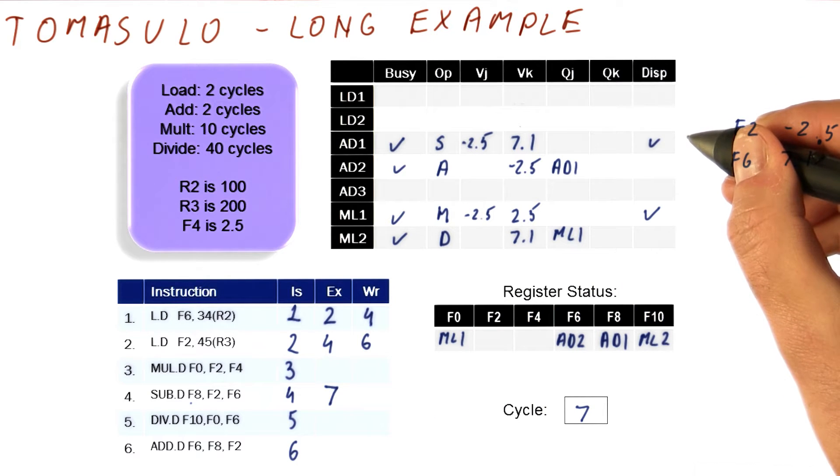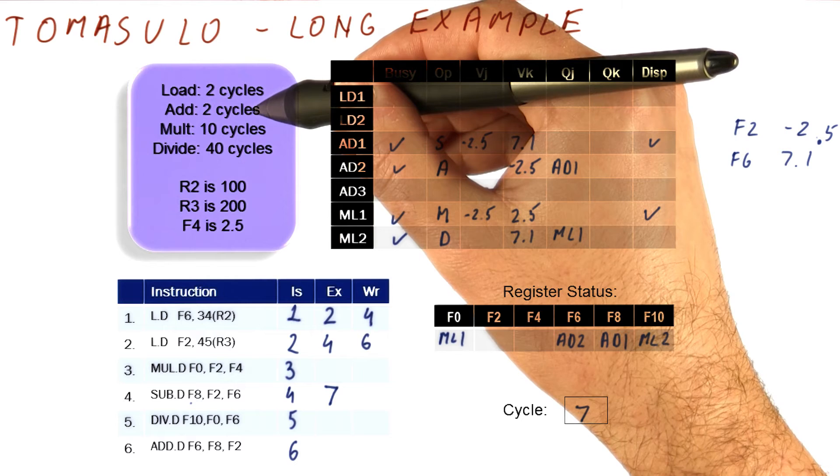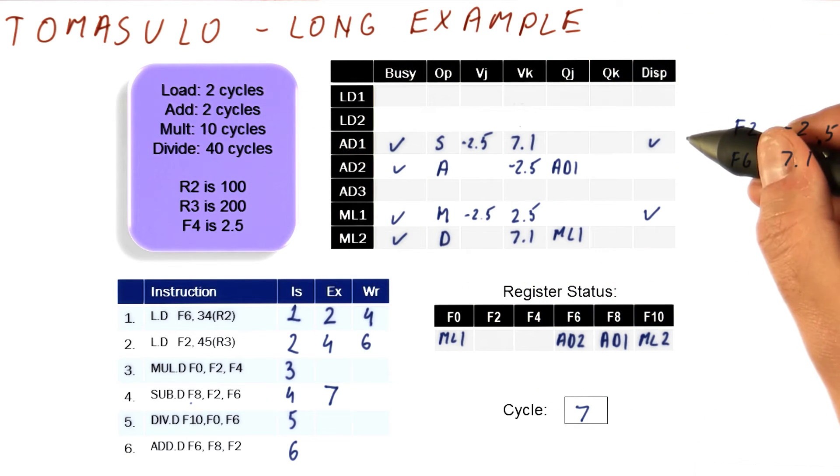It's going to become eligible because adds and subtracts take two cycles. So in seven and eight, this is going to execute. It's going to try to broadcast in cycle nine.